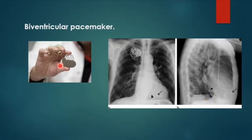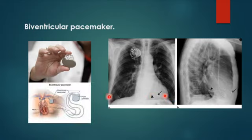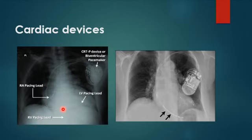This is the biventricular pacemaker — you can see it's slightly smaller in size, a new generation. One lead passes through the right subclavian into the right atrium, another into the right ventricle, and one passes through the veins draining from the left ventricle into the left ventricle. This is just to show you how it looks.